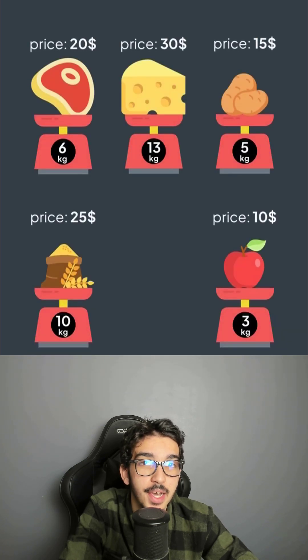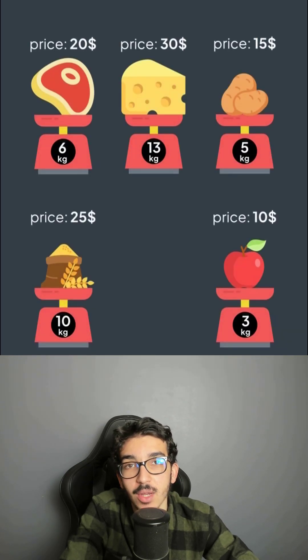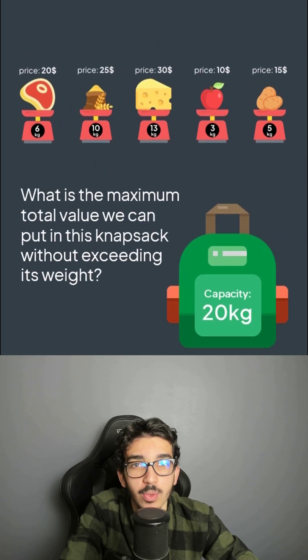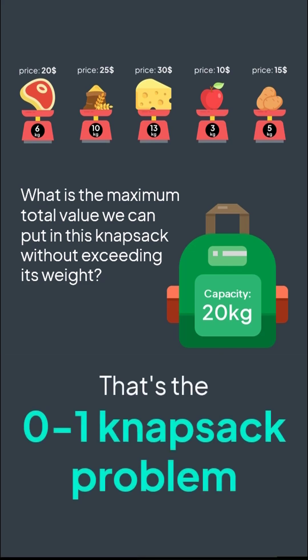Imagine that you have a set of items with different values and weights, and a knapsack with a fixed capacity. You want to fit in as much value as possible without exceeding the capacity, knowing that you can take each item at most once. This is the 0-1 knapsack problem — 0-1 because you either take the item or you don't.